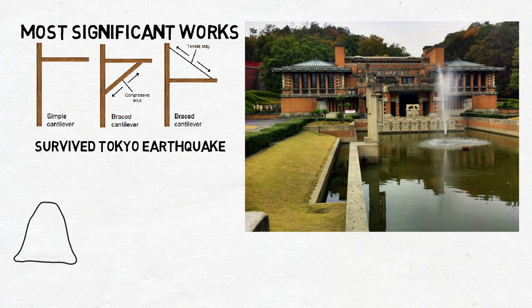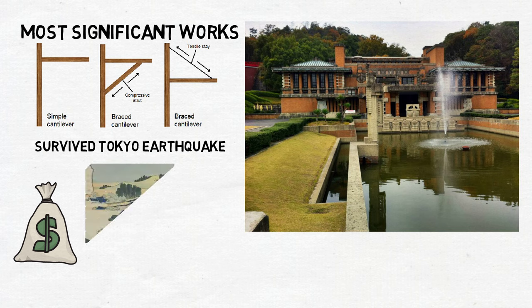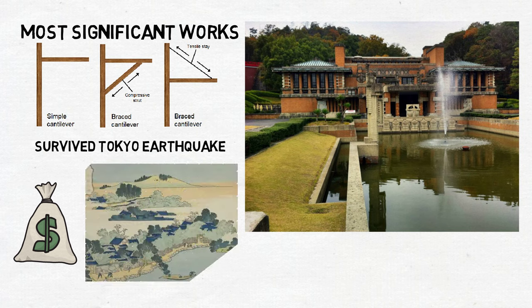Due to the continuous struggle to get commissions due to the scandals that surrounded him, his finances dried up in 1926. The bank seized his house. A year earlier, it had burned down a second time, on this occasion by lightning, and he had to sell his prized collection of Japanese prints.